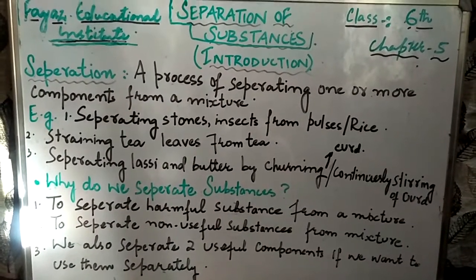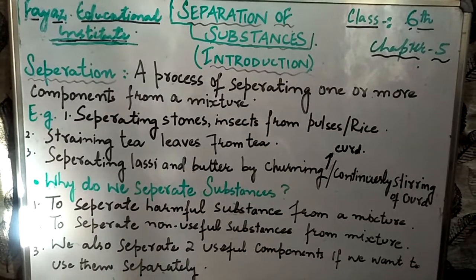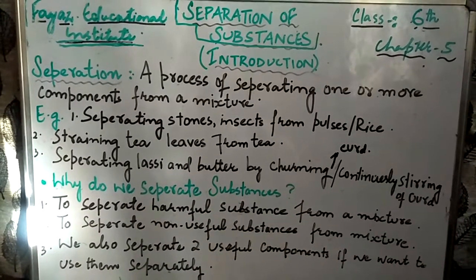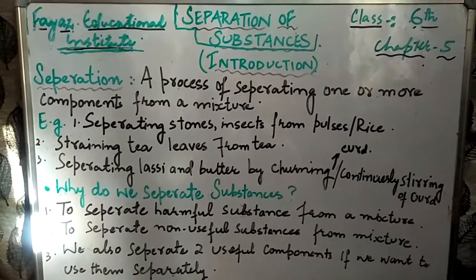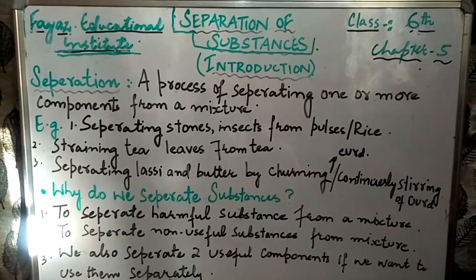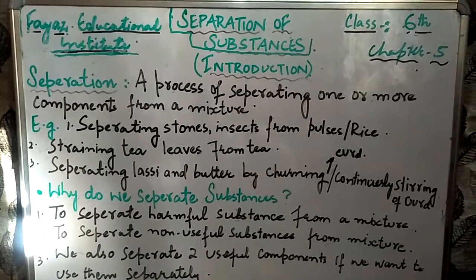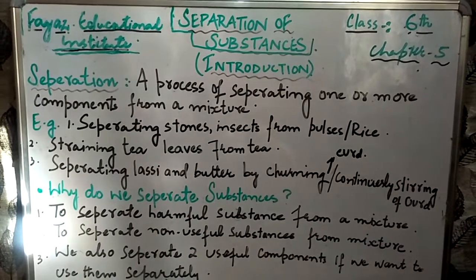Another example is ginning. Ginning is a process where we separate cotton seeds from cotton fiber.